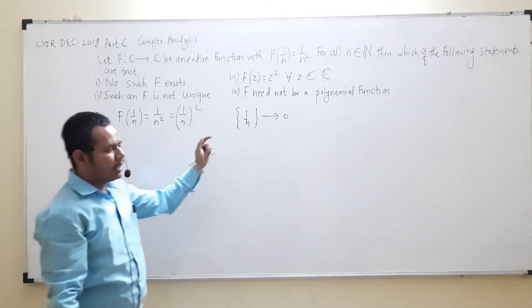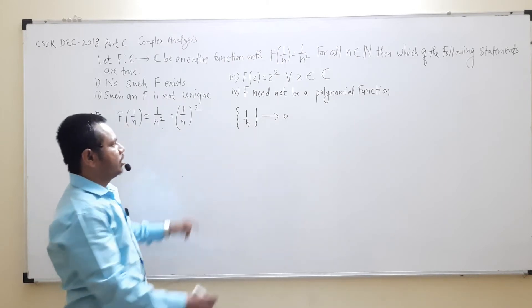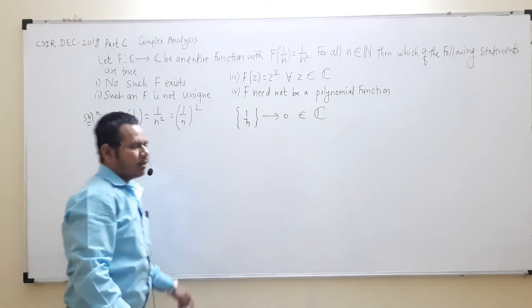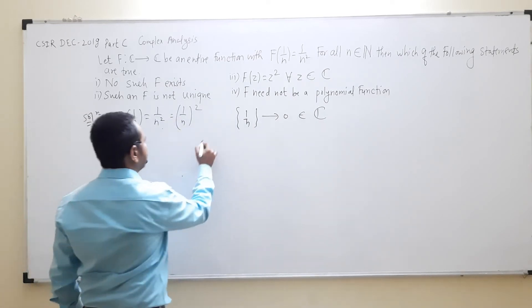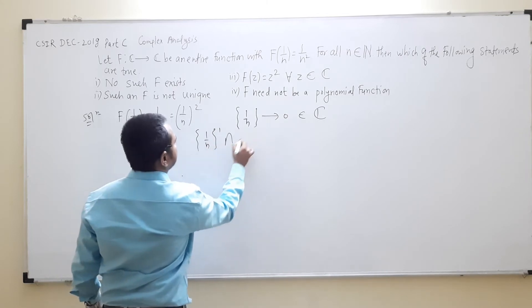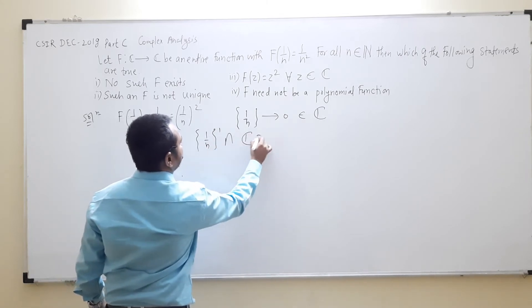Now f(1/n) converges to 0, and this 0 belongs to our domain. That means this {1/n}' (limit point) intersection with our domain is non-empty.